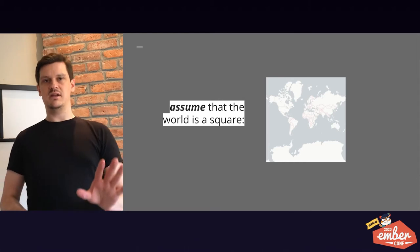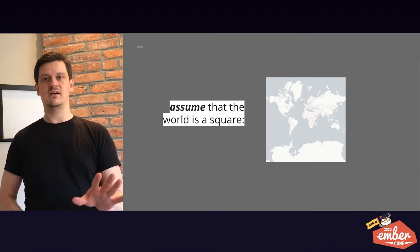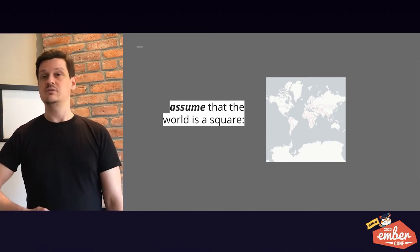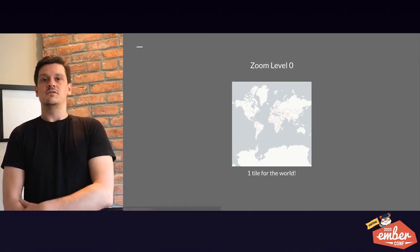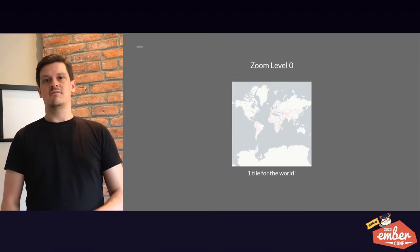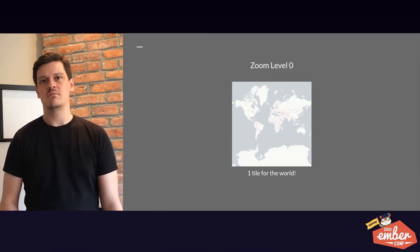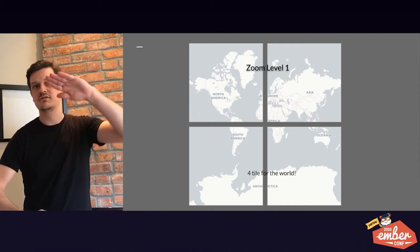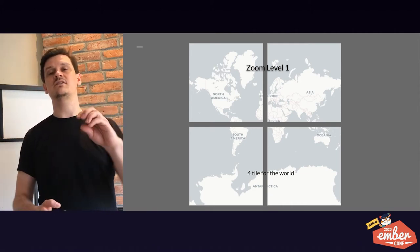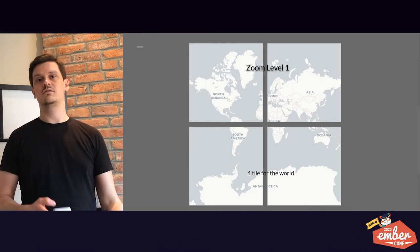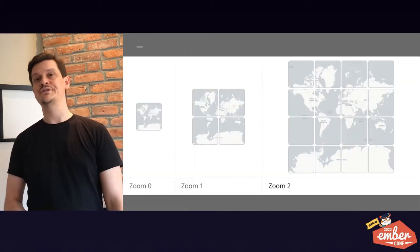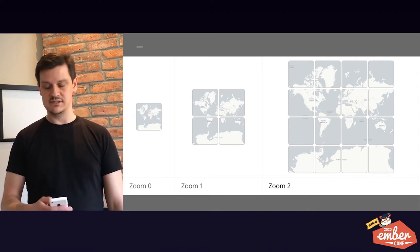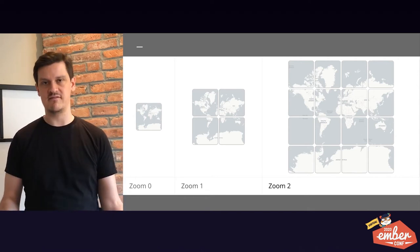To break it down a little bit, when tiling something, assume that the world is a square. For zoom level zero, we have one tile for the world. But zoom level one, there are four tiles. So if you're trying to zoom in, you get more tiles. I like to think of it as a pyramid.